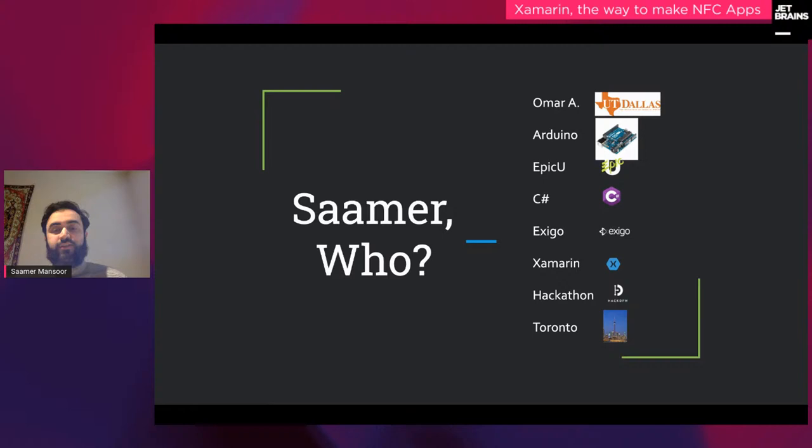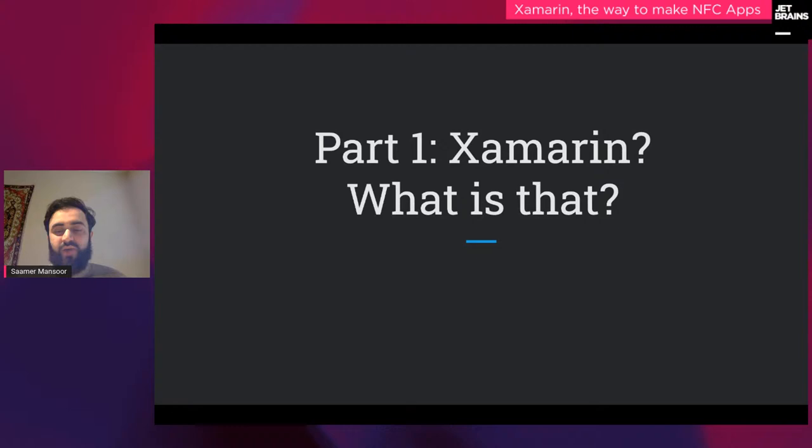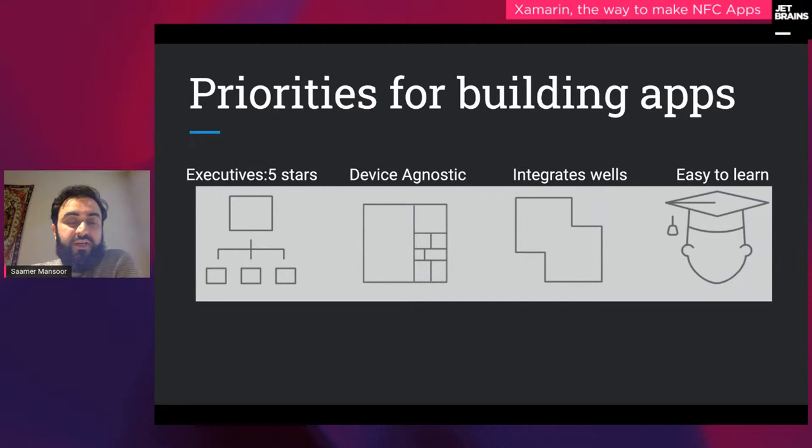So, what is Xamarin and why are we talking about it? When you're building apps at a company, there are different priorities: you need a very high quality app — executives want five stars. From a technical perspective, it has to be device-agnostic across iOS and Android, integrate well with existing back-end systems, and be easy to learn, because you might not be at that company forever.